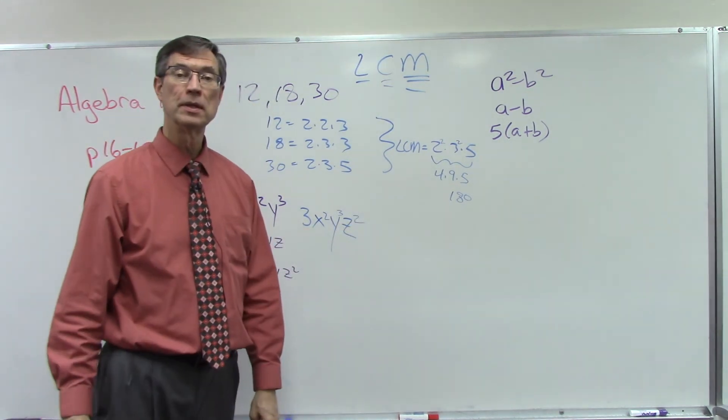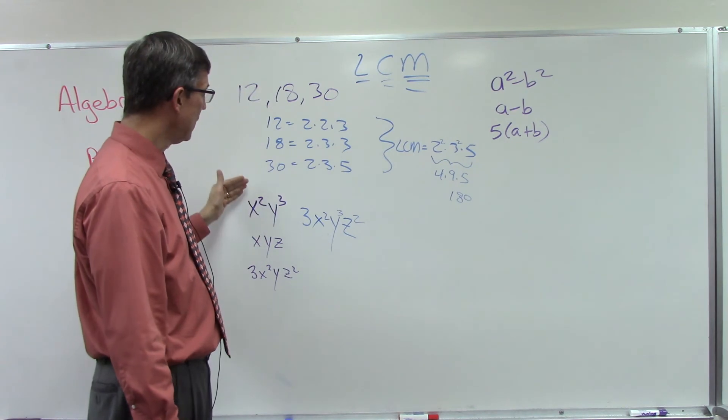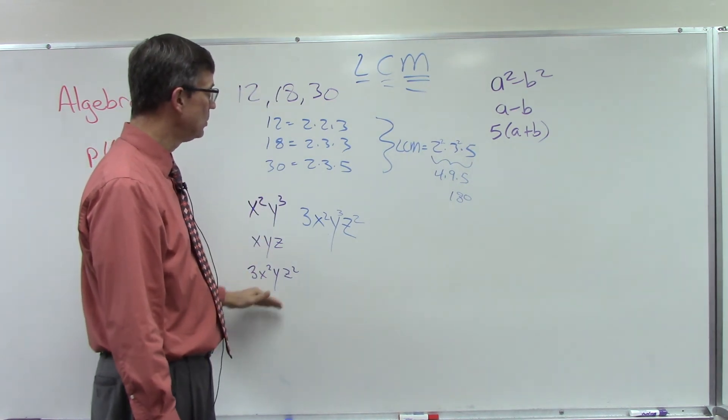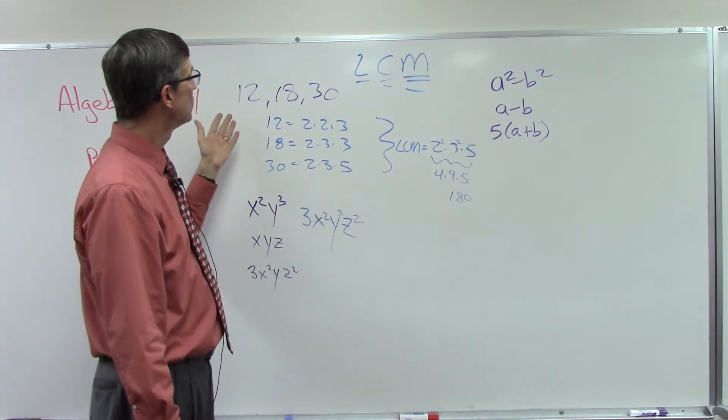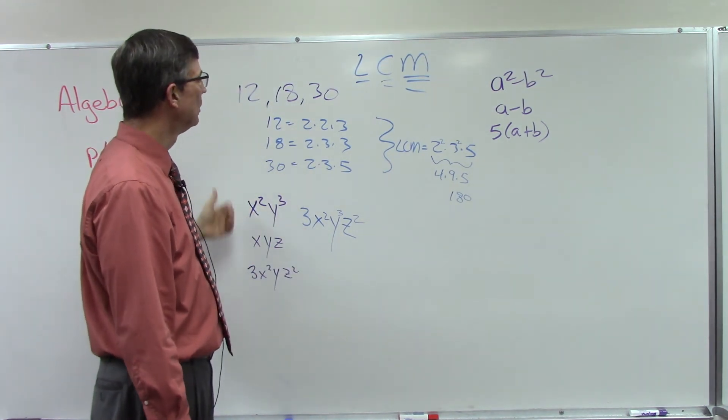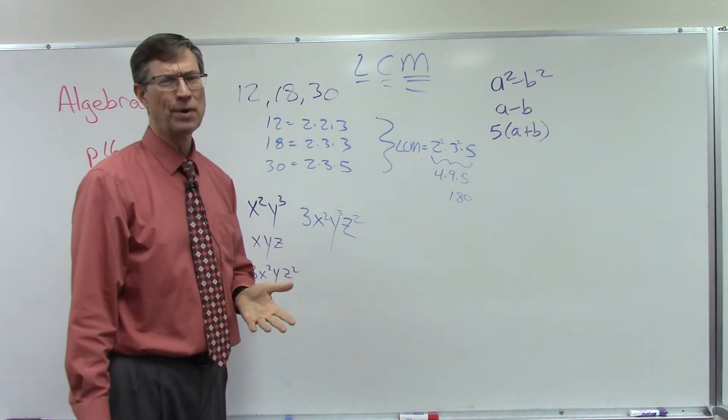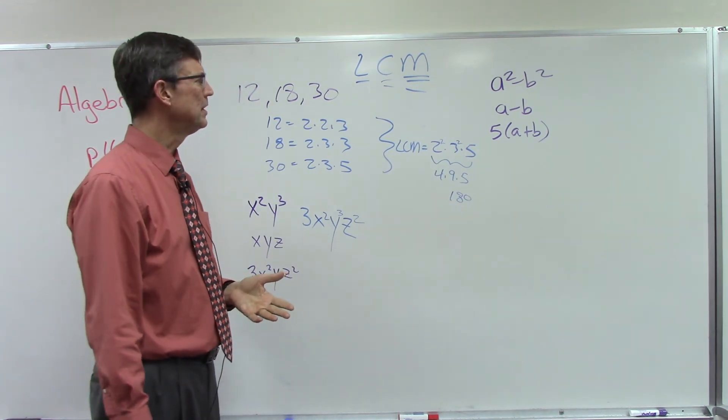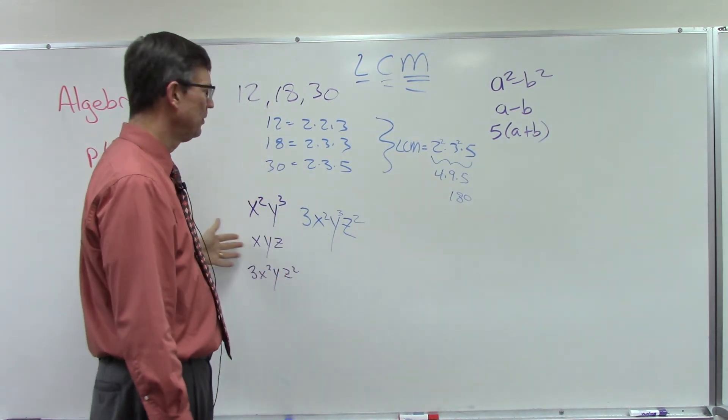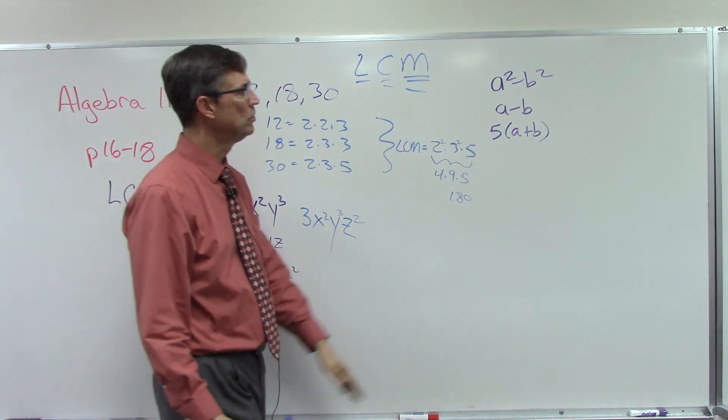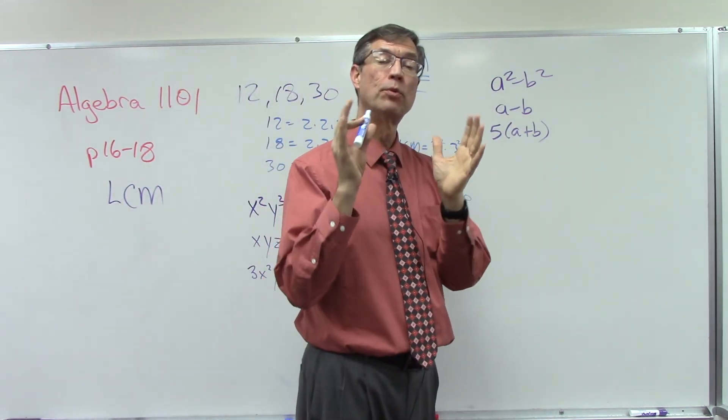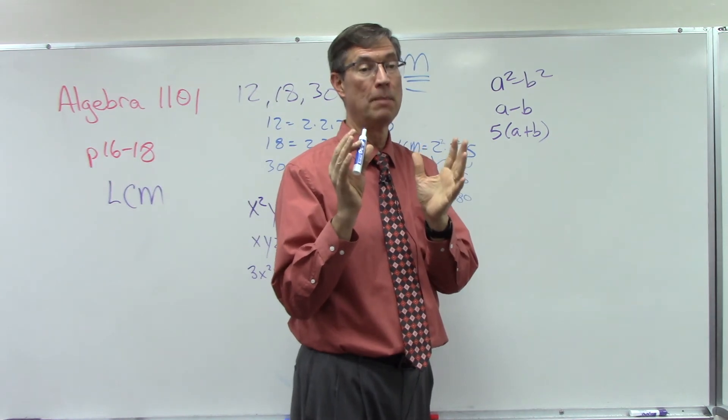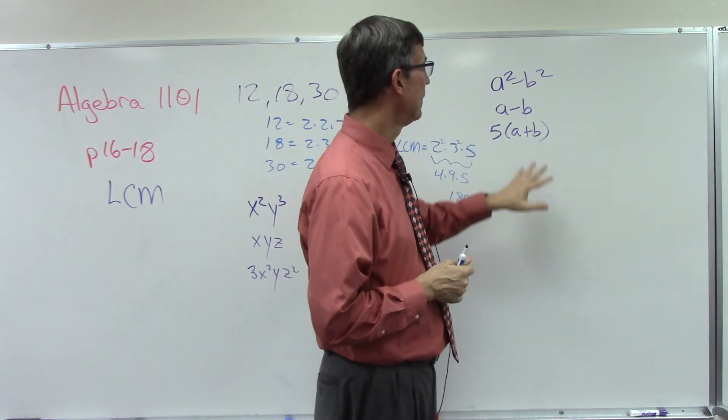What's the most number of times that z is used? None here, once here, but it is used twice here, so we have to use it twice here. So again, every factor that's being used, and we take it the most number of times it's used in any of them. I just kind of made up these two. They're similar to what you have. They don't give you a lot of practice on page 18. They give you a couple of this type, a couple of this type, and then they jump right into using these where you get to factor them.